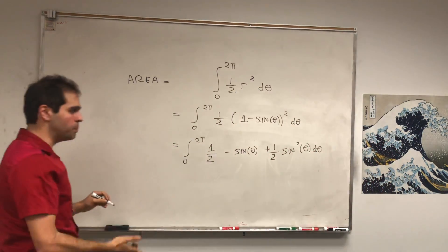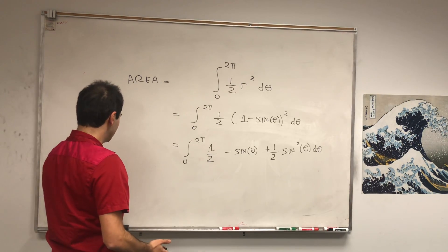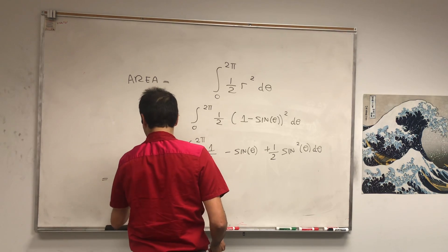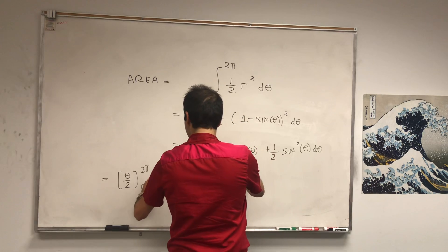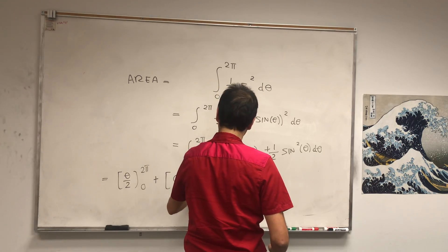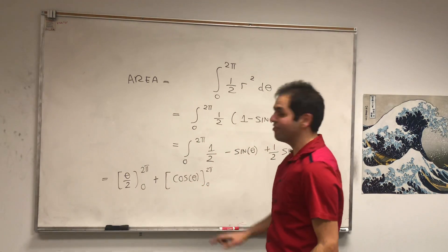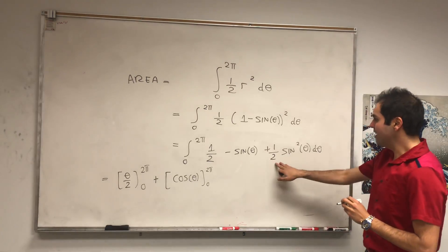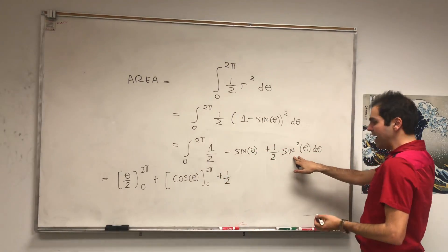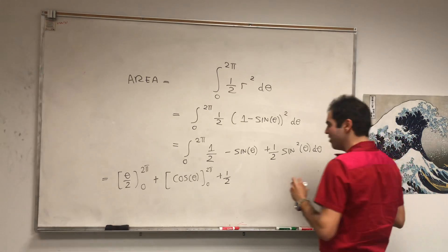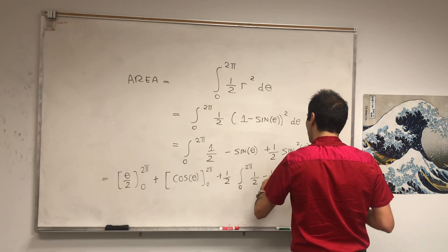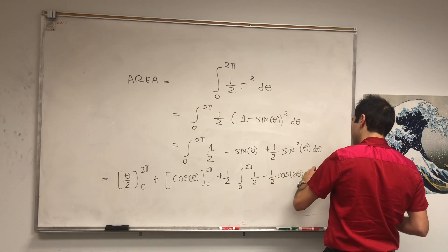That's very good, and then each piece, if you want, we can evaluate separately. So this is the anti-derivative is theta over 2, from 0 to 2 pi. This one, an anti-derivative is cosine of theta, from 0 to 2 pi. Because if you differentiate cosine, you get minus sine, and for this, we just need to work a little bit harder.